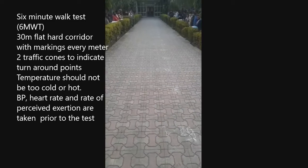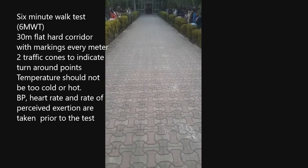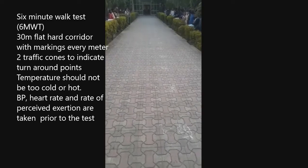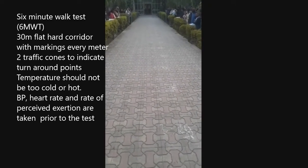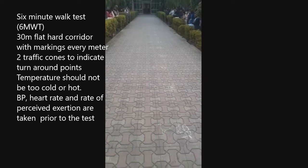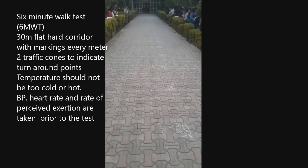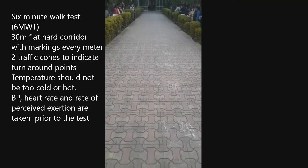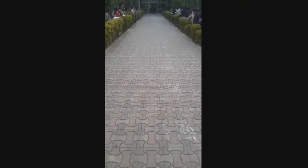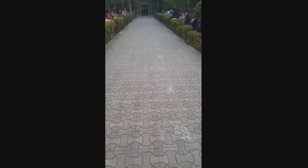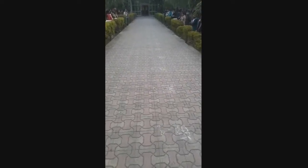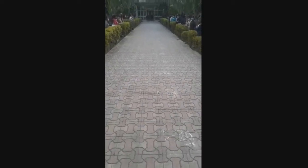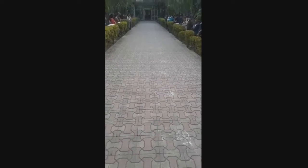Then instruct the participant to walk as fast as possible to cover the maximum distance in 6 minutes. As soon as the participant stops, you have to document the distance covered. It is indicated prior to the test that if the participant feels any dizziness, syncope, weakness, muscle pain, cramps in the lower limb, or any other signs where they feel they cannot complete the test, they can indicate and stop in between.